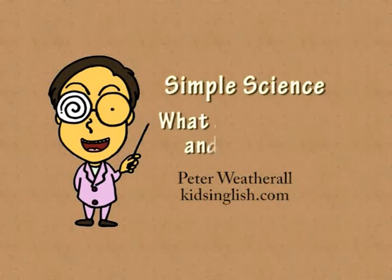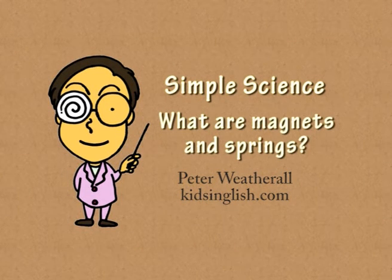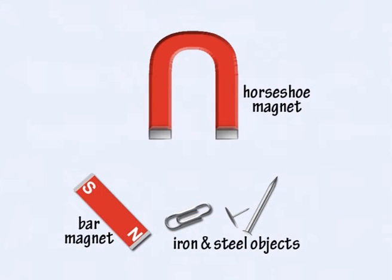Simple Science. What are magnets and springs? A magnet exerts a force on other magnets and on metal objects made of magnetic materials.